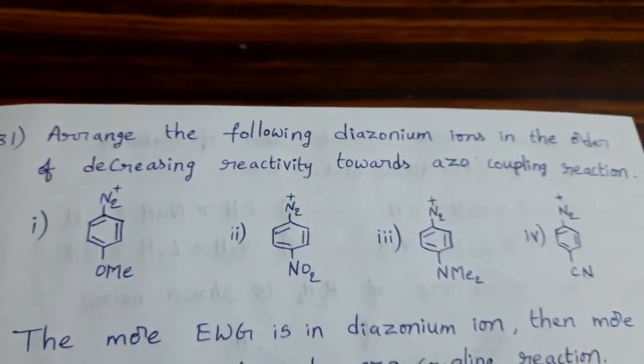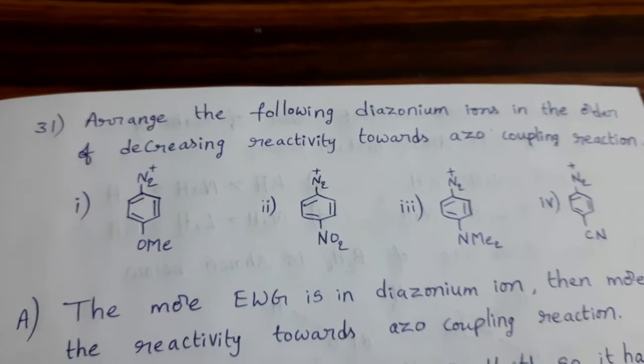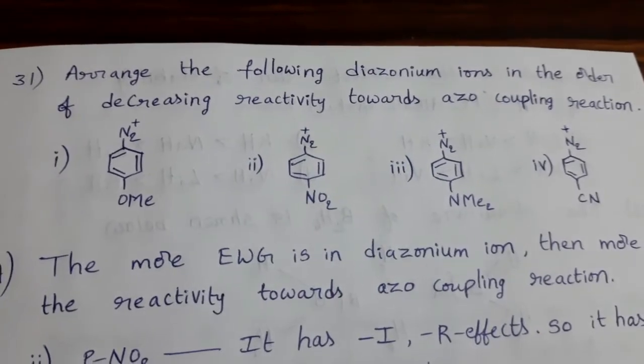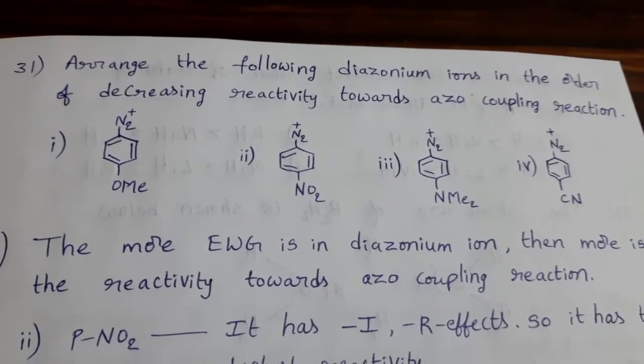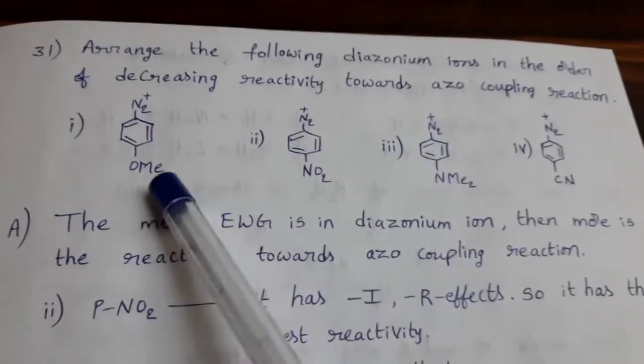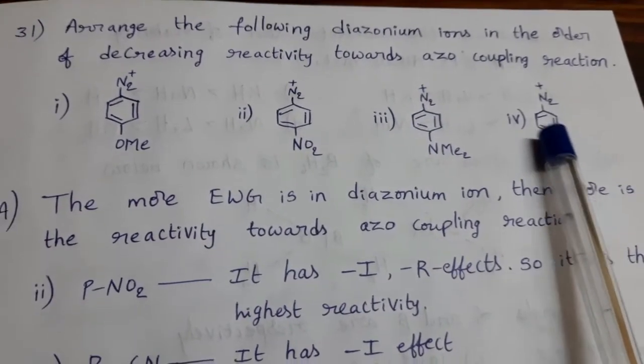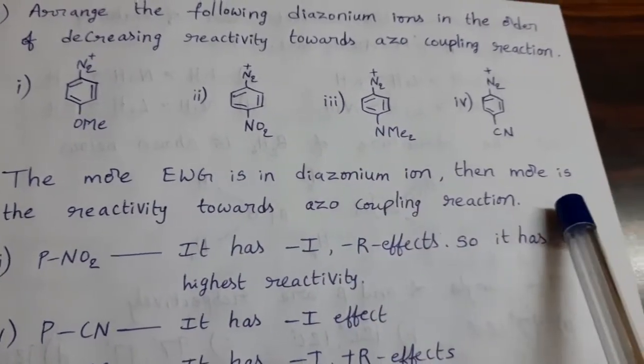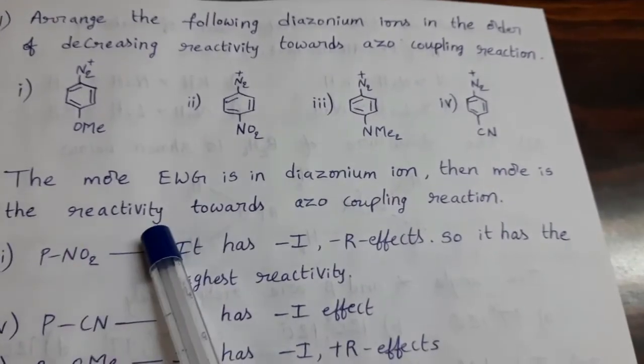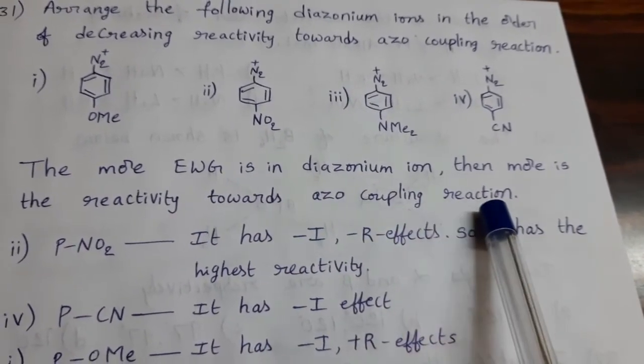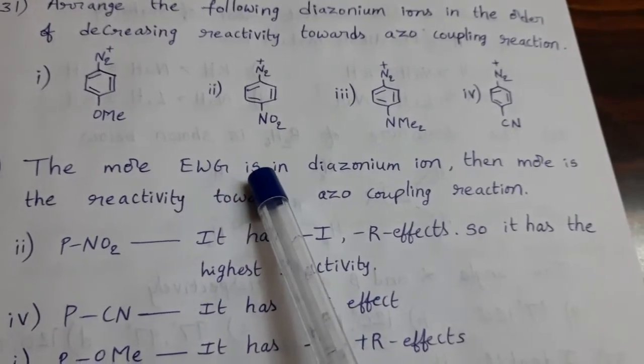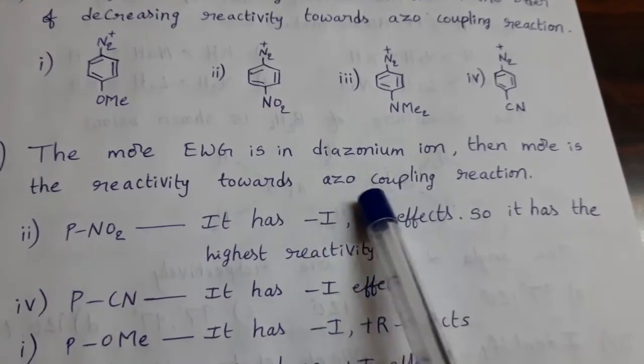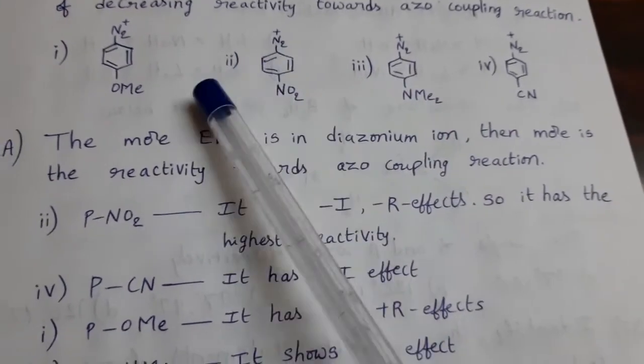Arrange the following diazonium ions in the order of decreasing reactivity towards azo coupling reaction. Towards azo coupling reaction we should write the order for these diazonium salts. Four diazonium ions are given. The more electron withdrawing group is in diazonium ion, then more is the reactivity towards azo coupling reaction. Electron withdrawing group is present then the reactivity is more towards azo coupling reaction.